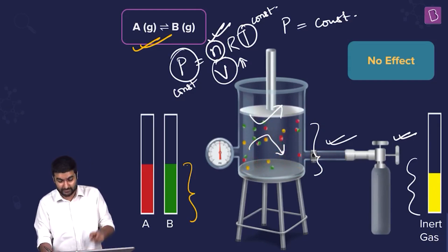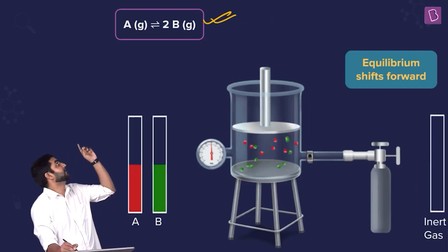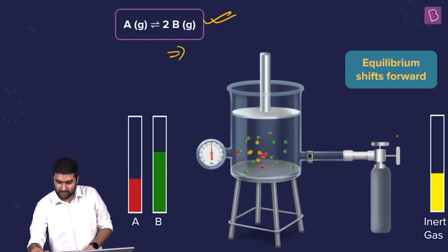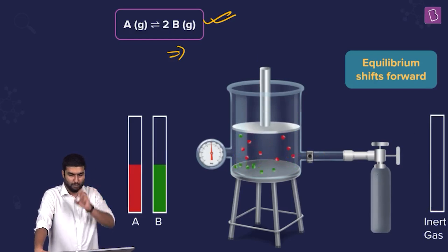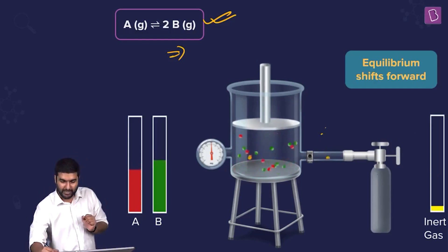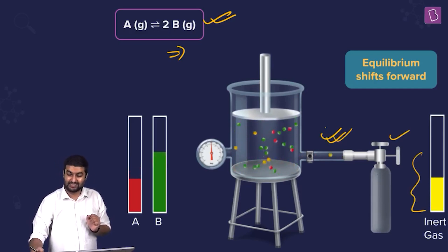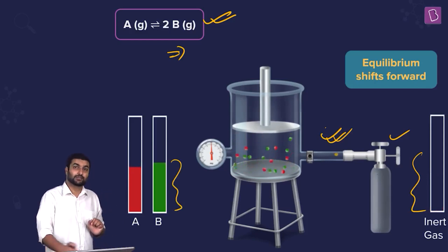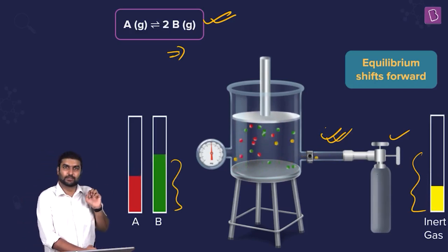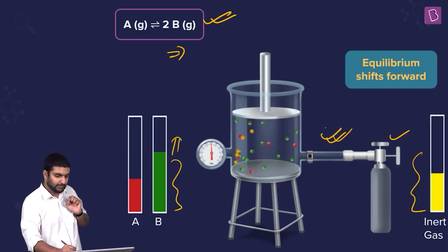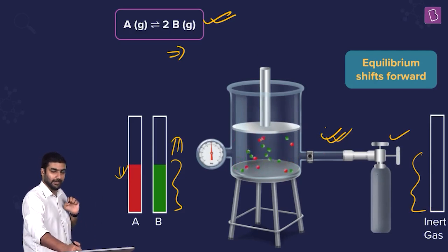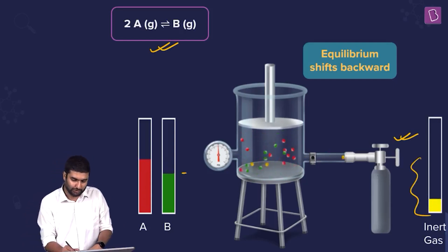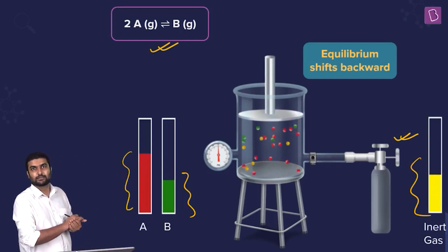Looking at the animation for a delta ng positive reaction: when the valve opens and inert gas is introduced, the reaction moves forward — you can see the forward products increasing and reactants decreasing. For the opposite example with delta ng negative, the valve opens, and the reaction moves backward — this increases and this decreases, showing the equilibrium shift in the direction of higher moles.